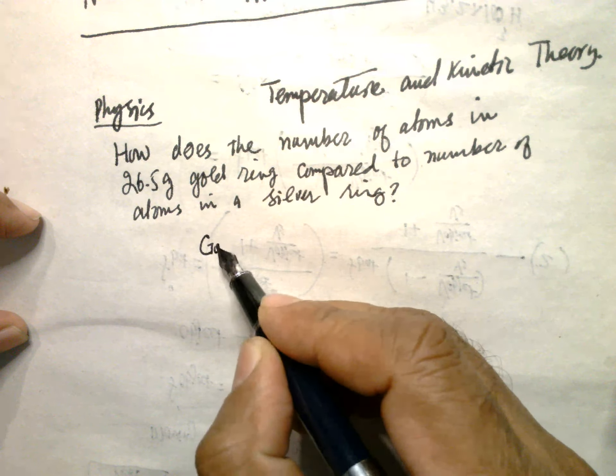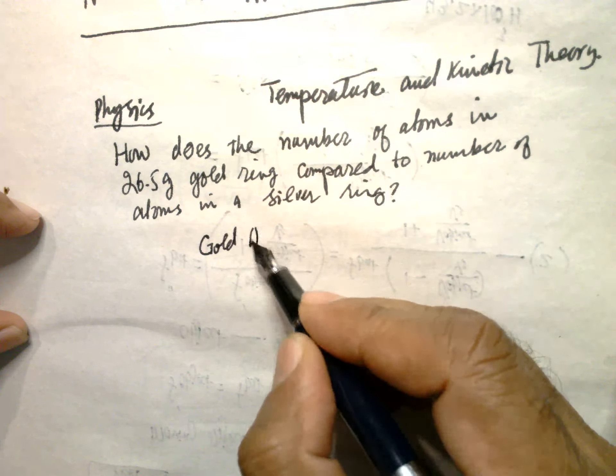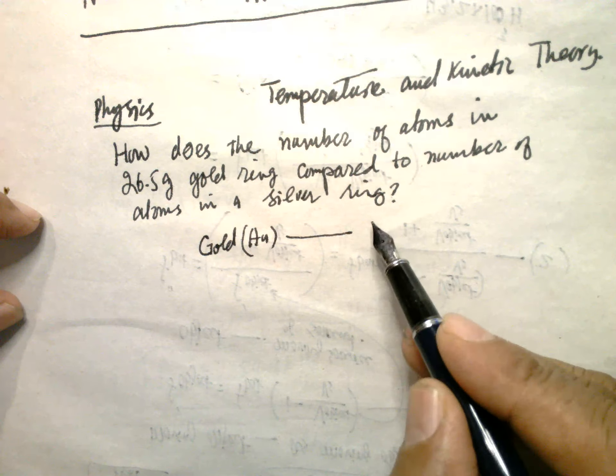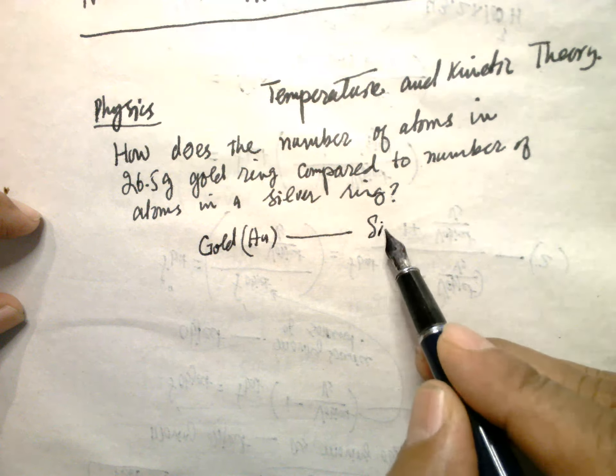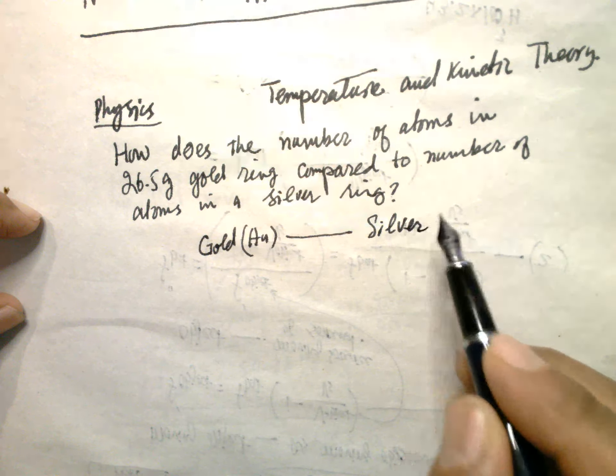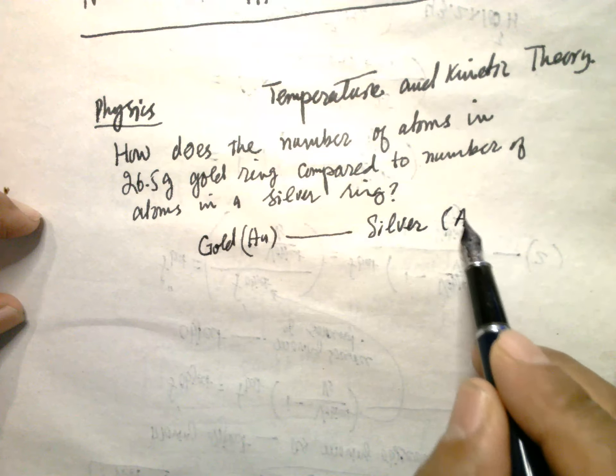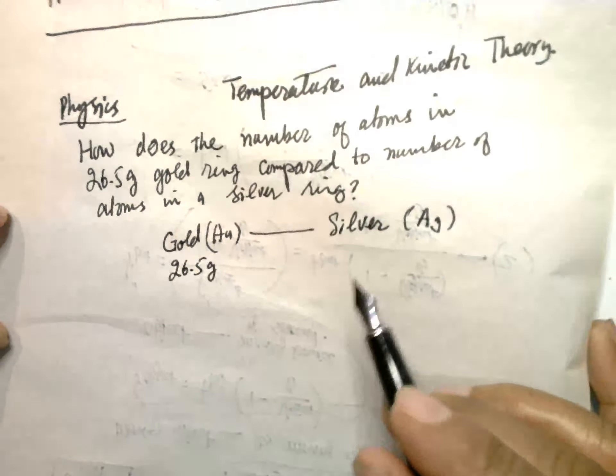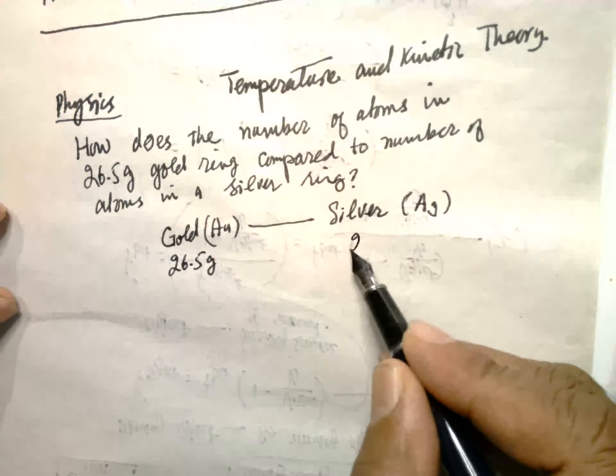So gold ring, Au, to silver ring, Ag. 26.5 grams and 26.5 grams.